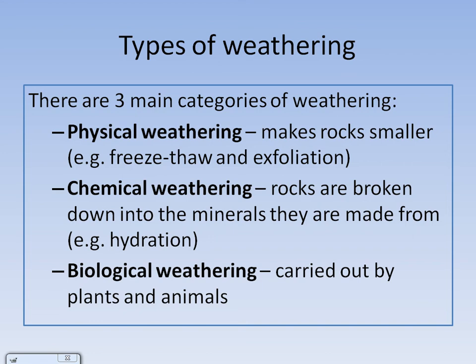Chemical weathering is when rocks are broken down into minerals, such as through hydration. And the final one is biological weathering, which involves plants and animals. For example, animals might eat plants that are attached to rocks.